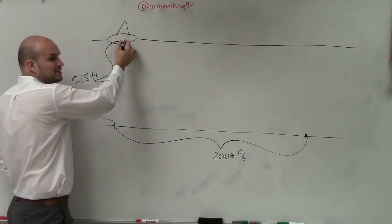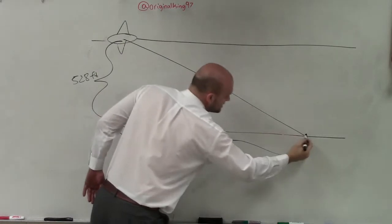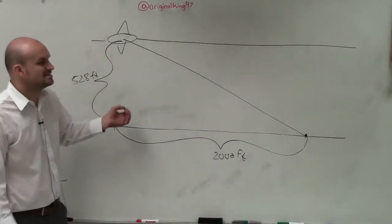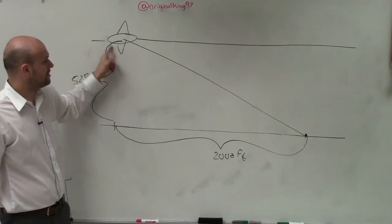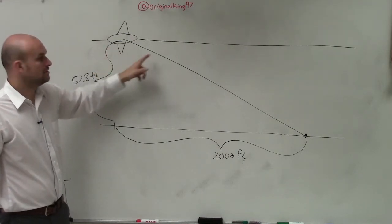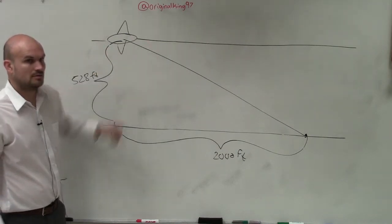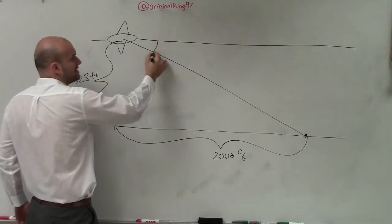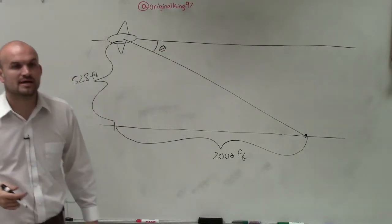That angle of depression is where he needs to go down to land. Where is the angle of depression — is it up here or down? Down. That is your angle of depression. Go back to the picture I showed you — that is your angle of depression.